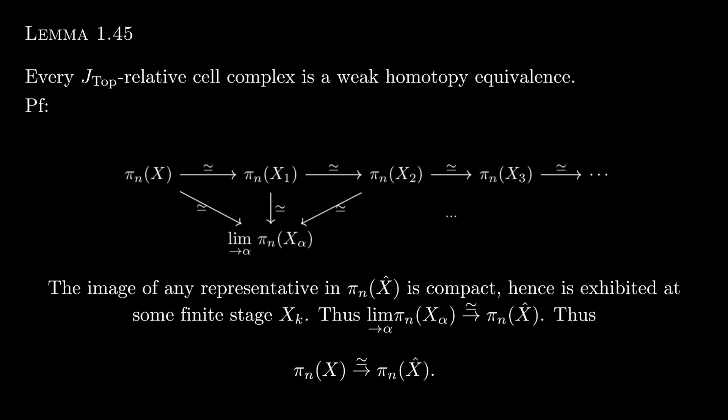Well, think about representatives for these homotopy groups. They come from interval cubes, which are compact. And the continuous image of a compact set is compact itself. So the representatives of all these homotopy groups intersect only finitely many cells, which means that they're actually exhibited all of them after a finite number of stages. And so the colimit in this diagram, the homotopy group of the colimit is isomorphic to the homotopy group of X-hat. And we're done.